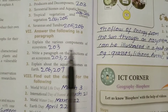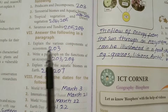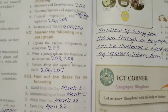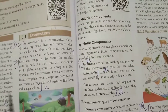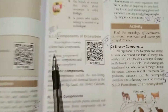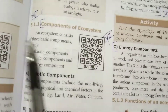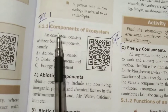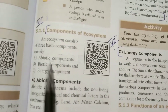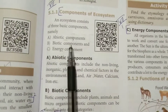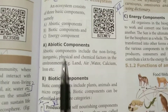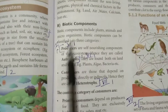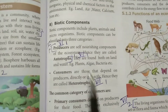Answer the following in a paragraph. First one: explain the various components of an ecosystem. Page number 203. Under components of ecosystem heading there are three components — mark the abiotic components, then producers, consumers, and decomposers.